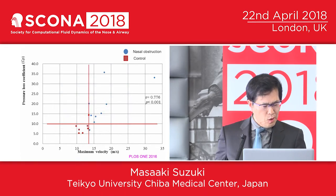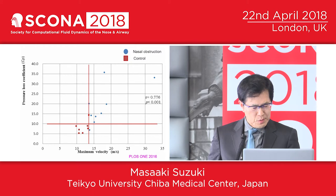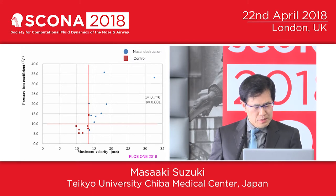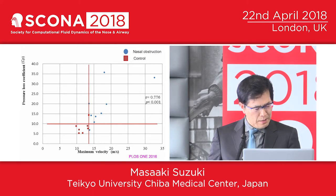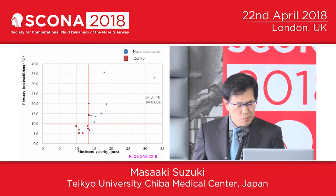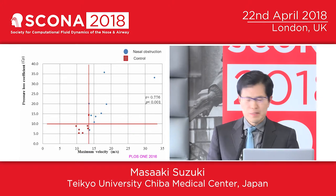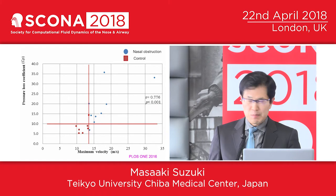The nasal obstruction and control groups were clearly separated by a velocity threshold of 13.5 meters per second and a pressure loss coefficient of 10.0. Our results suggested that CFD analysis can predict CPAP intolerance.